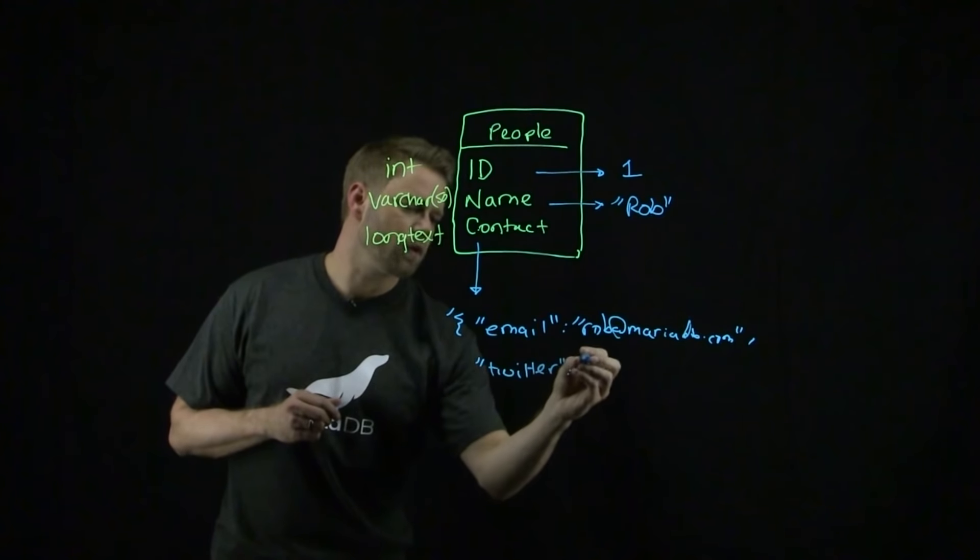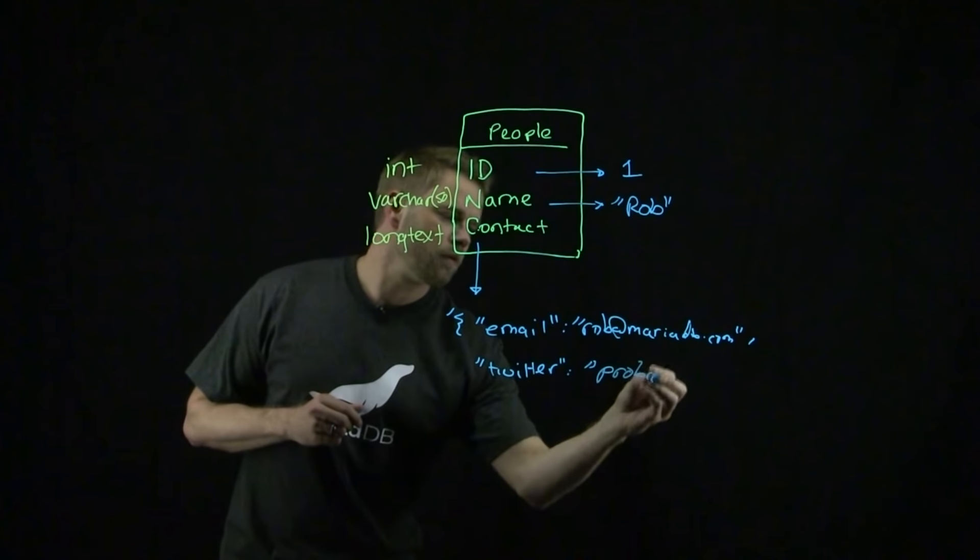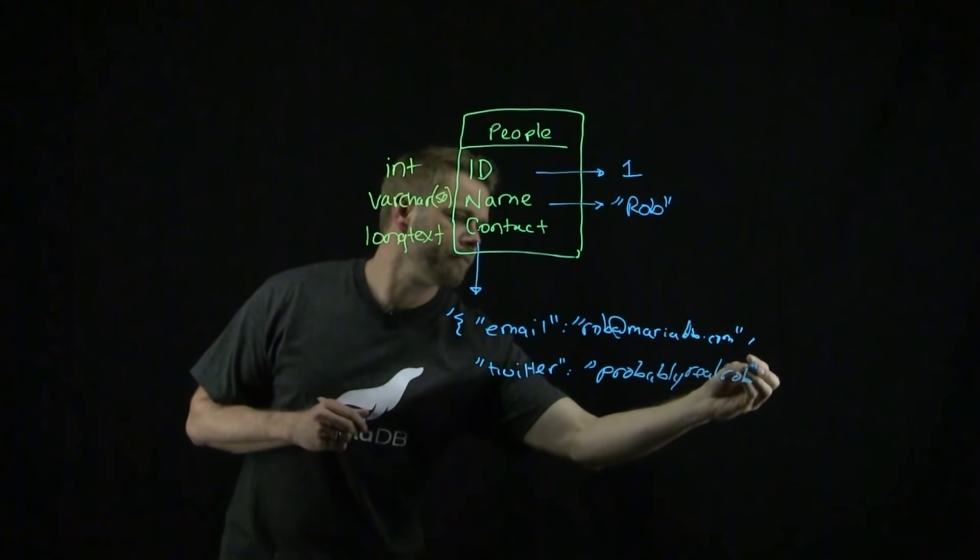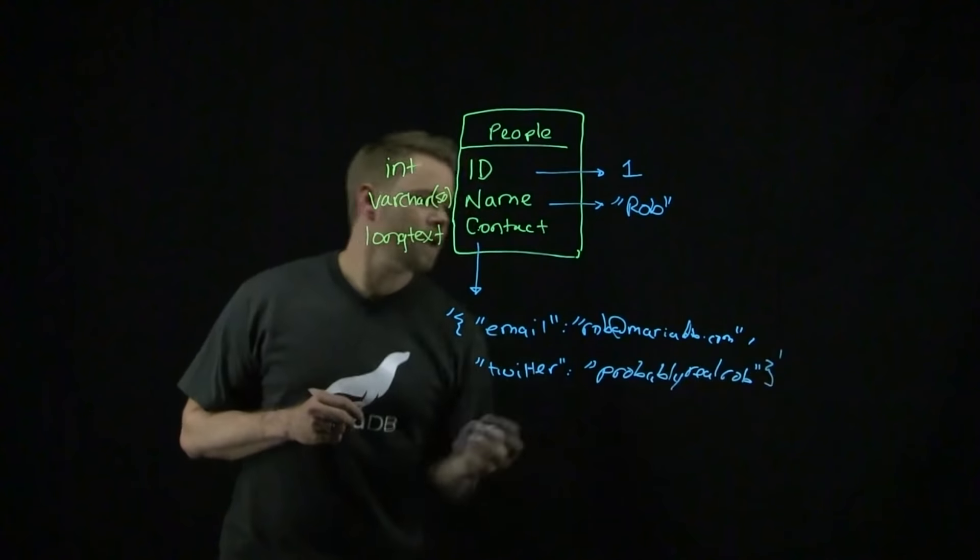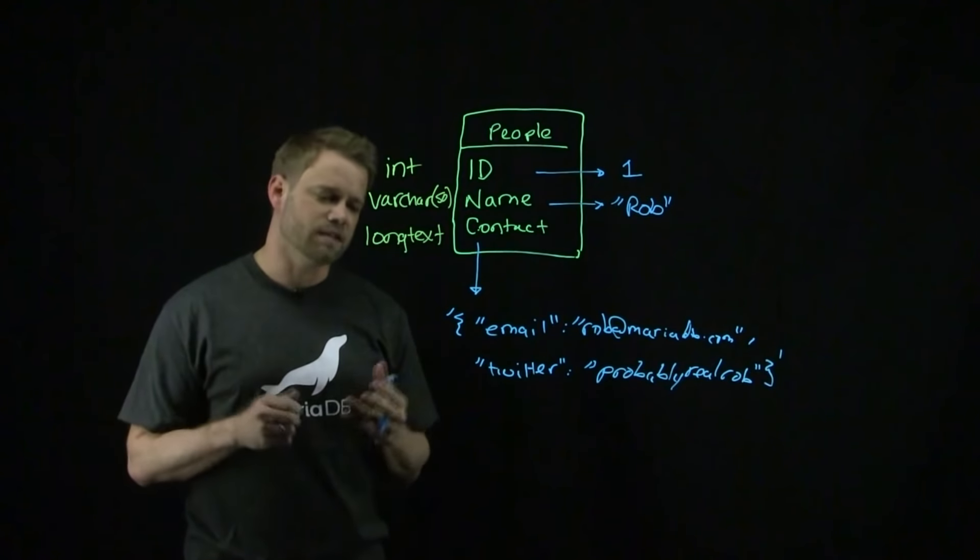So Twitter, colon, and then I'll put probably @realRob. I'll go ahead and close it, and this is a valid JSON document that can be stored within the table itself.